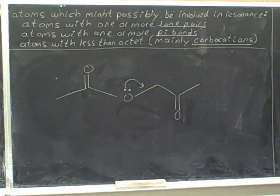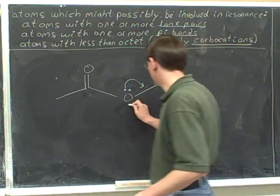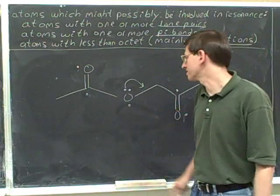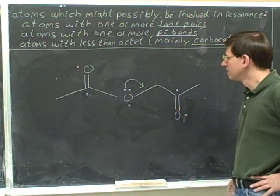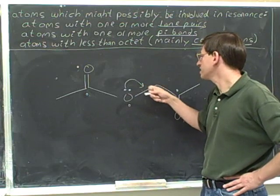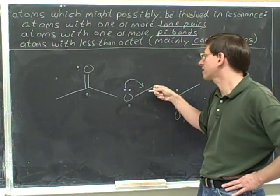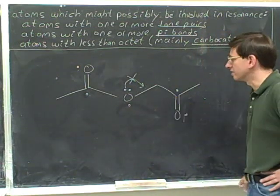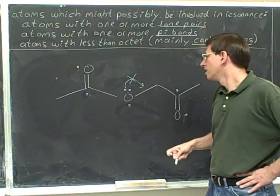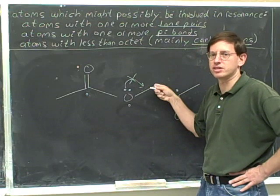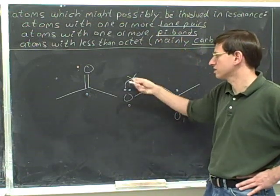Does this arrow seem legal? Let's start with the dots — same example as before, so dots go in the same places. Remember, these dots do not represent electrons; they just show the candidates for resonance. This arrow has a tail on this oxygen — that's fine, it has a dot. But the head is pointing towards this carbon, and that carbon doesn't have a dot. This carbon is not a candidate for resonance, so this is an illegal arrow. Even though the head isn't pointing directly at it, it's trying to form a new pi bond involving this carbon, which is not allowed.